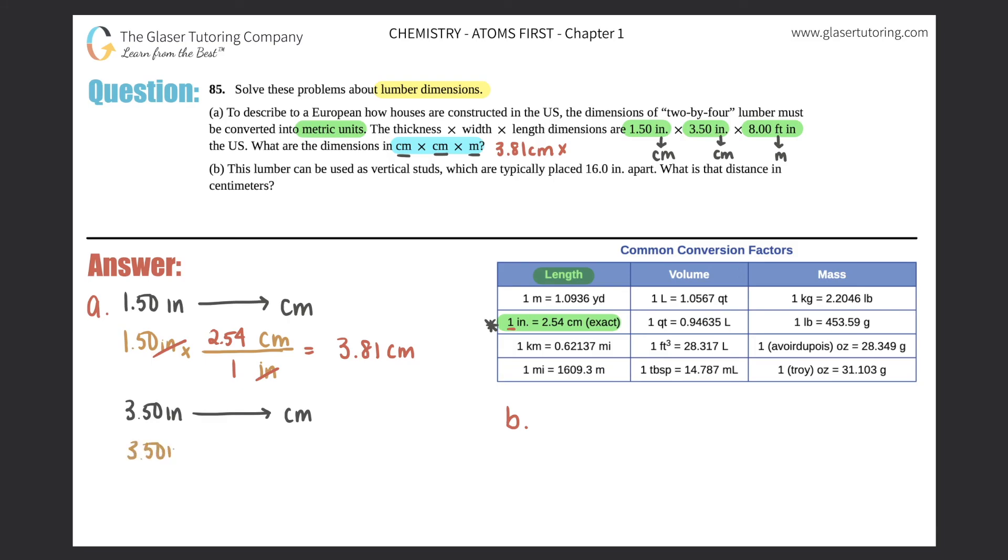The next part is 3.50 inches and we got to convert it into centimeters. We know that direct conversion, so let's get to it. 3.50 inches times by a ratio, inches goes on the bottom, centimeters up top, and we know that 2.54 centimeters equals one inch. It's the same conversion as before. Inches cancel, we do the math, 3.5 times 2.54.